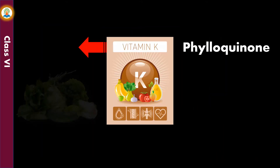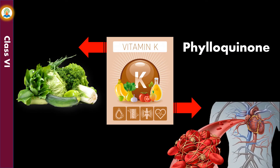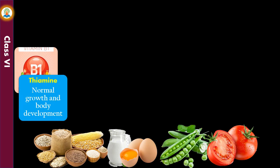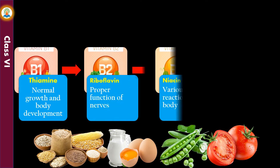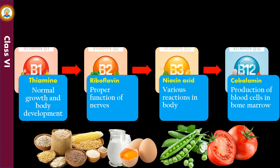Sources of vitamin K are green leafy vegetables; it helps in clotting of blood. Vitamin B1 is required for normal growth and development. Vitamin B2 is essential for proper functioning of nerves. Vitamin B3 is required for various reactions taking place in the body. Vitamin B12 is essential for the production of blood cells in our bone marrow.